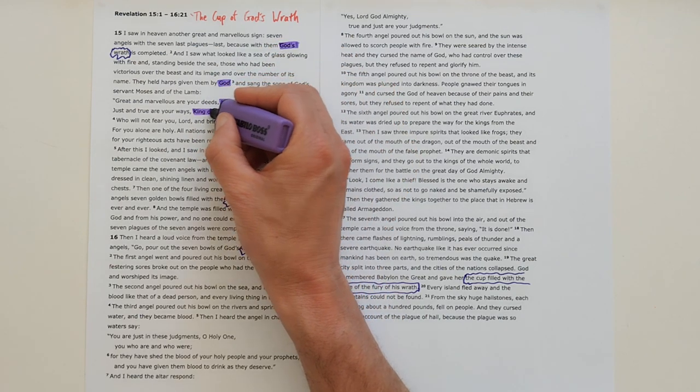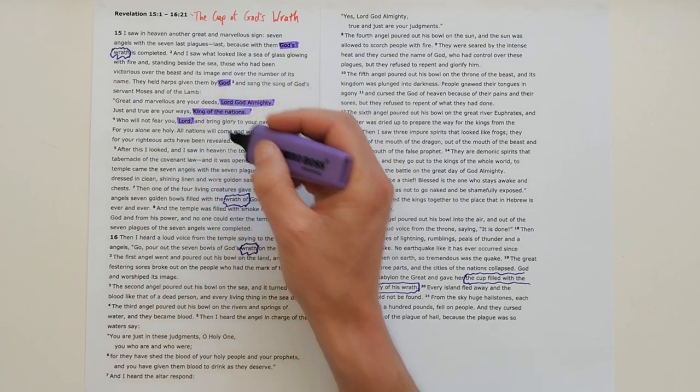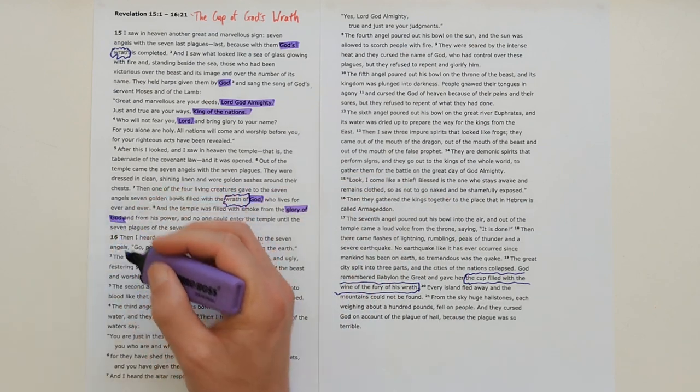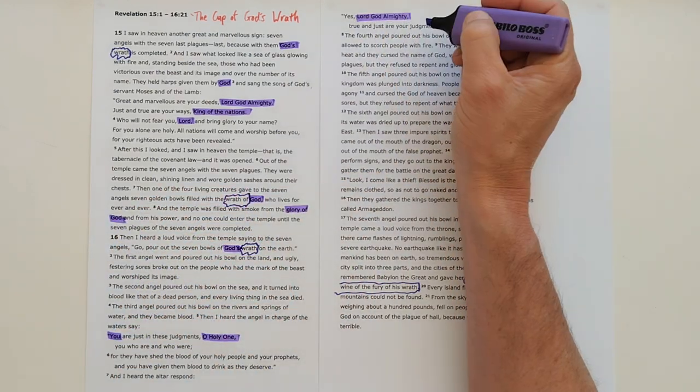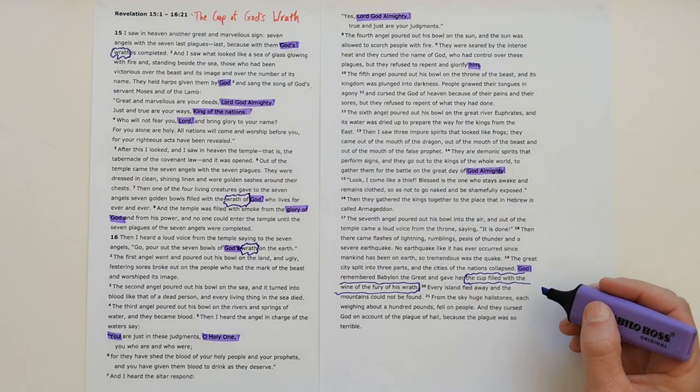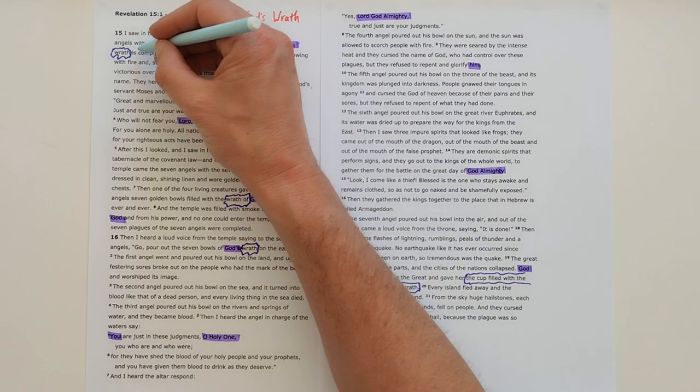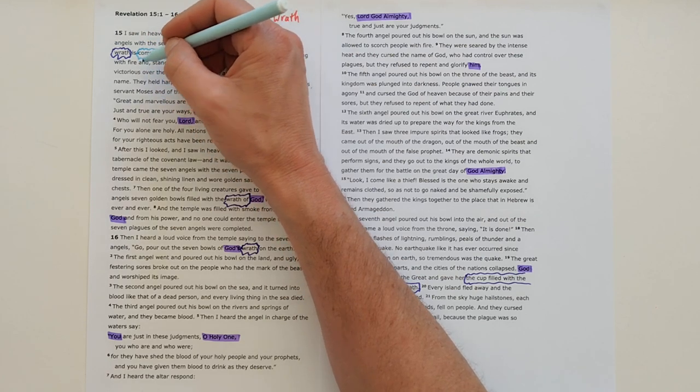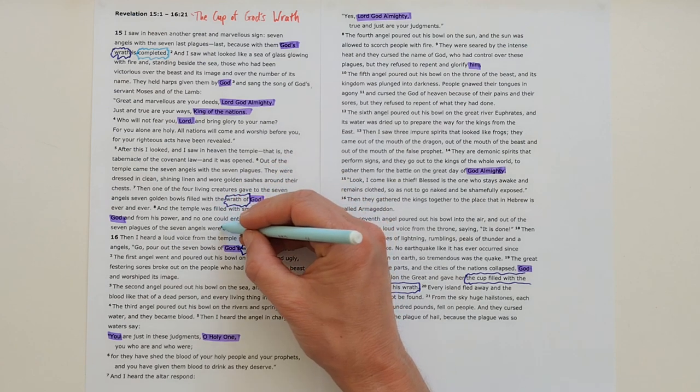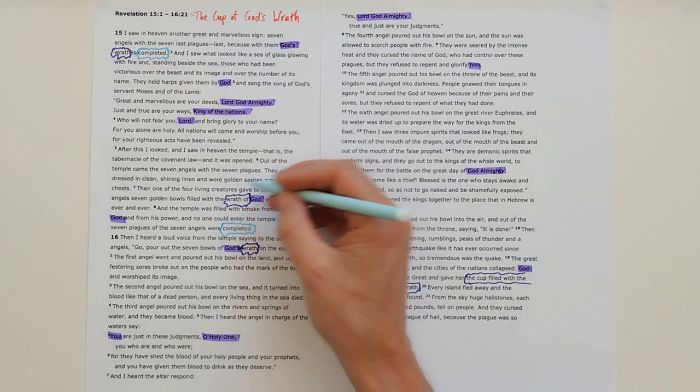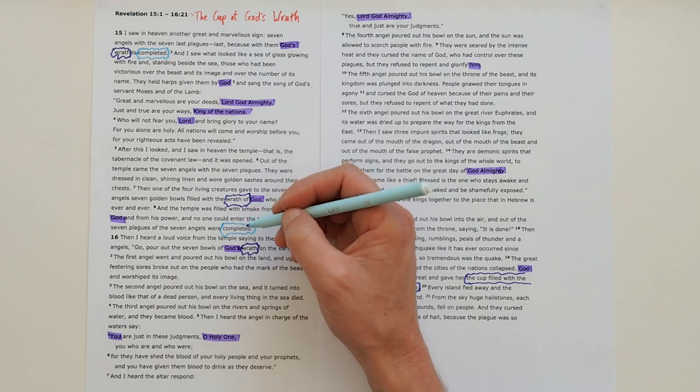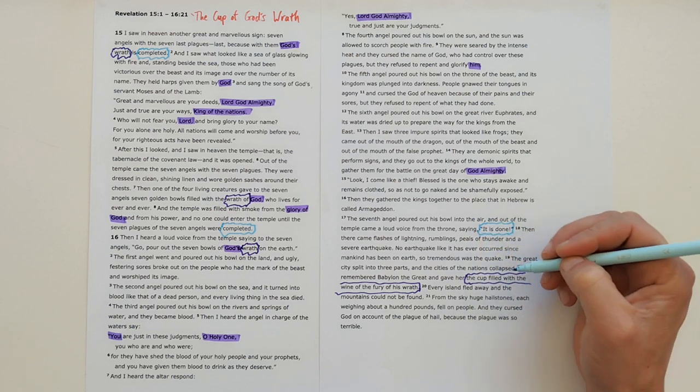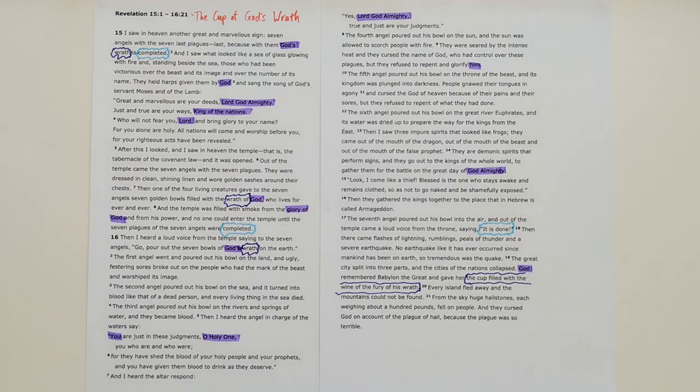You can trace where we see the Lord God Almighty, the King of the nations He's called, the Lord through this whole section. The wrath of God, the glory of God. And what we're seeing here is the completed wrath of God being poured out.